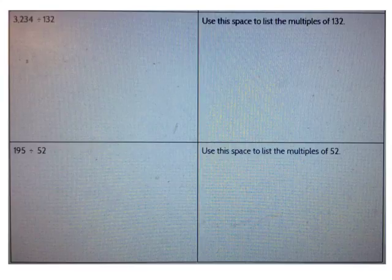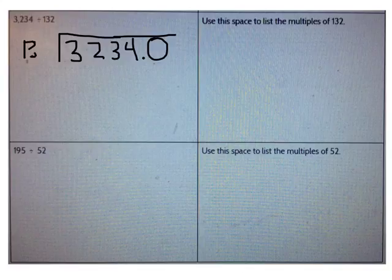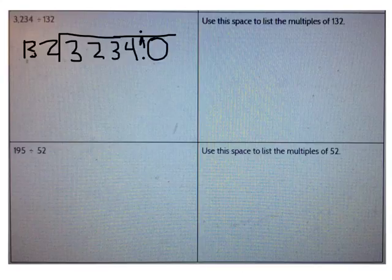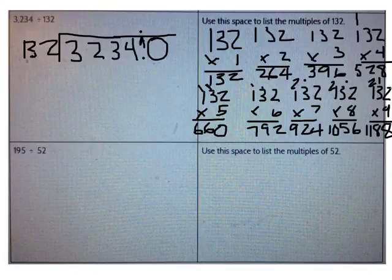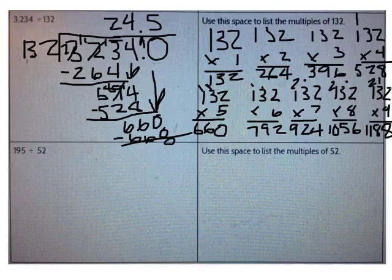Now we're going to try two problems where we'll have a decimal remainder. Go ahead and write 3,234.0 inside and 132 outside. Bring the decimal point straight up. The first thing we need to do is list the multiples of 132. Go ahead and list them on your paper, then enter them on the computer. Check your multiples with mine. Now we can start dividing. We're going to start dividing in the tens place. Go ahead and solve now. The correct answer is 24 and 5 tenths. Check your work with mine.